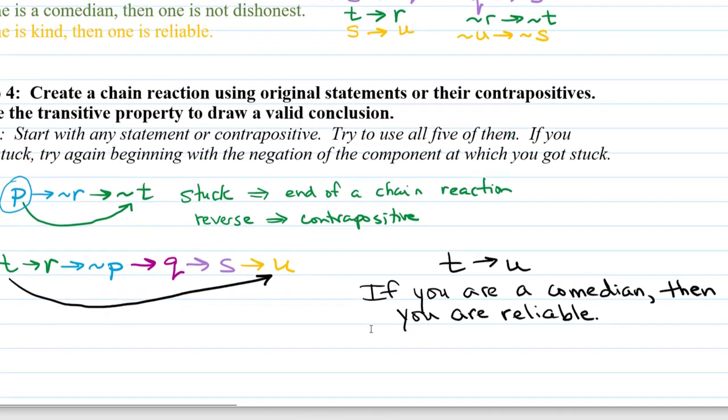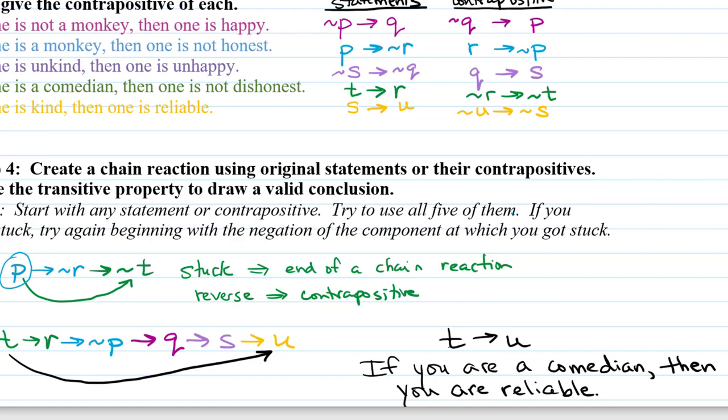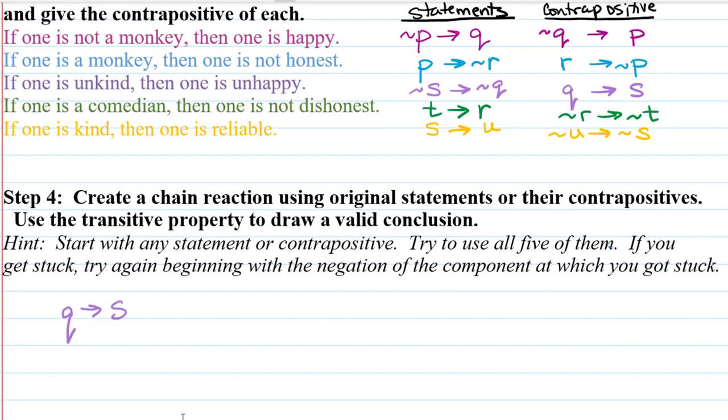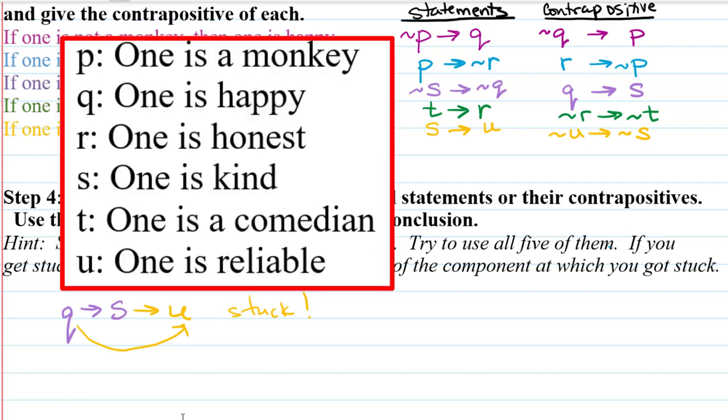Let's say that you decided to start with Q. Let's see if we would get the same conclusion. In purple there, we see that Q implies S. Then we would see that S implies U. And then guess what? We would get stuck. While it would be a valid conclusion to say that Q implies U. In other words, that one is happy implies that one is reliable. That would be valid.